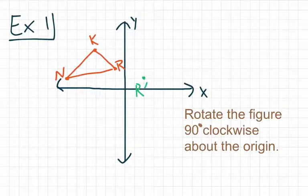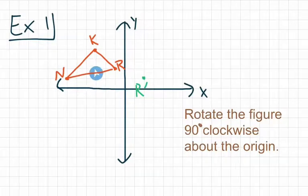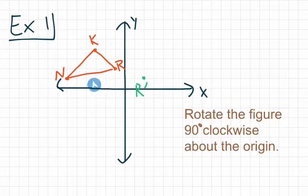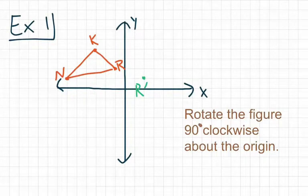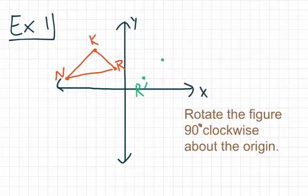Likewise, with point K, the original coordinates for that are negative 3 comma 4. So negative 3 comma 4 for point K. When we rotate it, however, K prime is going to be at 4 comma 3. So that's where we're going to place our point for K prime.